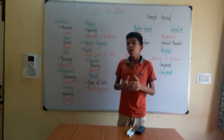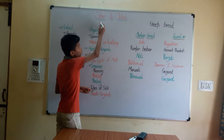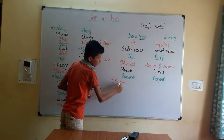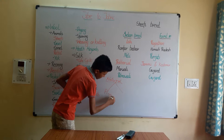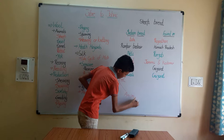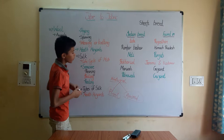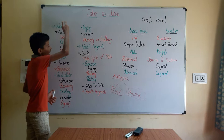In the previous class we learnt about natural fibers. Fibers are divided into two parts: natural and artificial fibers. Natural fibers are again divided into two parts: plant fibers and animal fibers. In the previous class we learnt about plant fibers, and today we are going to learn about animal fibers. The two major types of animal fibers are wool and silk.